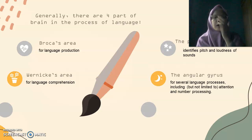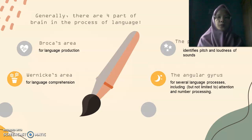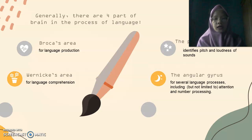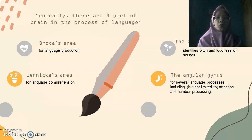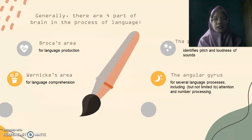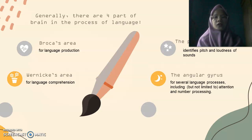Moving on to the next area — Wernicke's area. Wernicke's area is located in the cerebral cortex and is primarily responsible for language comprehension. When something goes wrong with it, the patient can still speak, but their language is nonsensical or incomprehensible. Because this area handles language comprehension, a person with an injury gets receptive aphasia — they can speak, but their language is nonsensical and incomprehensible.